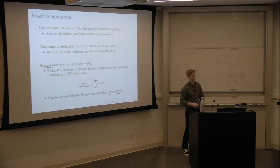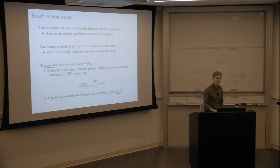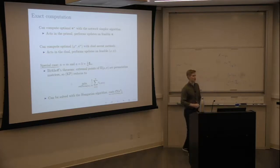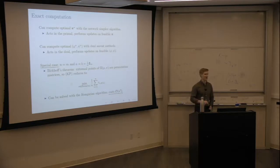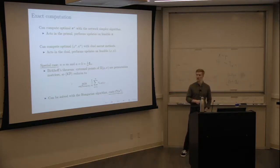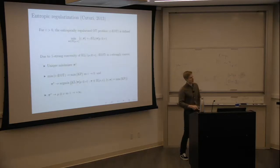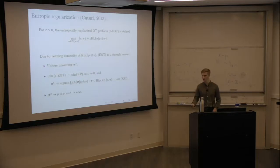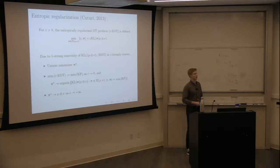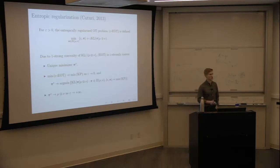One important thing to note is that the Hungarian algorithm costs on the order of n-cubed operations, which is quite expensive — especially for datasets with tens of thousands of entries. For a long time, this was the reason why practical applications of optimal transport in statistics and machine learning weren't really feasible. We were hindered by computational costs. So there is a need for approximate solvers, and the one I'll focus on is called entropic regularization of the optimal transport problem.